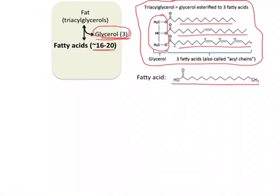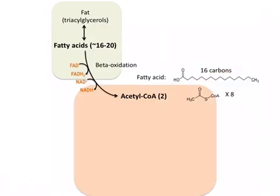Fats are a great way to store energy because these long carbon chains are highly reduced, which means that when they're oxidized to carbon dioxide, a large amount of energy is released. The most common process of fatty acid oxidation in the body is called beta oxidation, and it occurs in the mitochondrial matrix of most cells of the body.